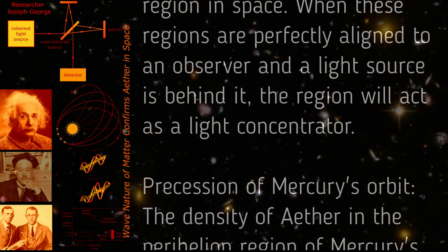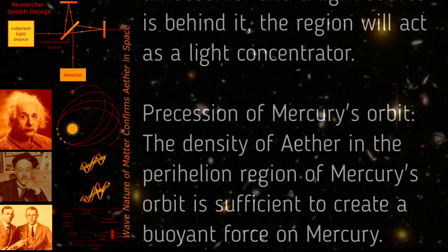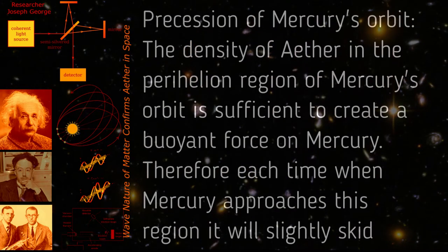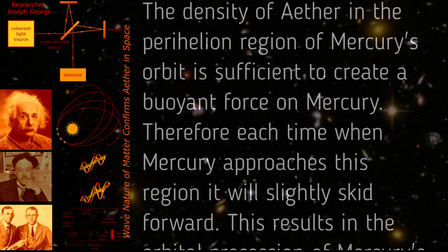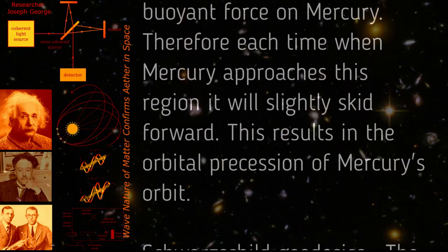Precession of Mercury's orbit: The density of ether in the perihelion region of Mercury's orbit is sufficient to create a buoyant force on Mercury. Therefore, each time when Mercury approaches this region it will slightly skid forward. This results in the orbital precession of Mercury's orbit.